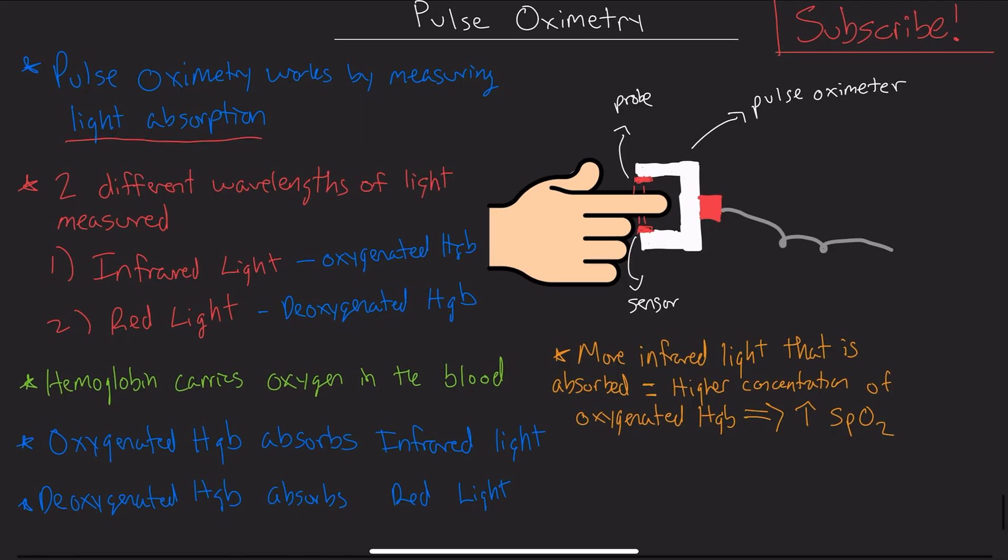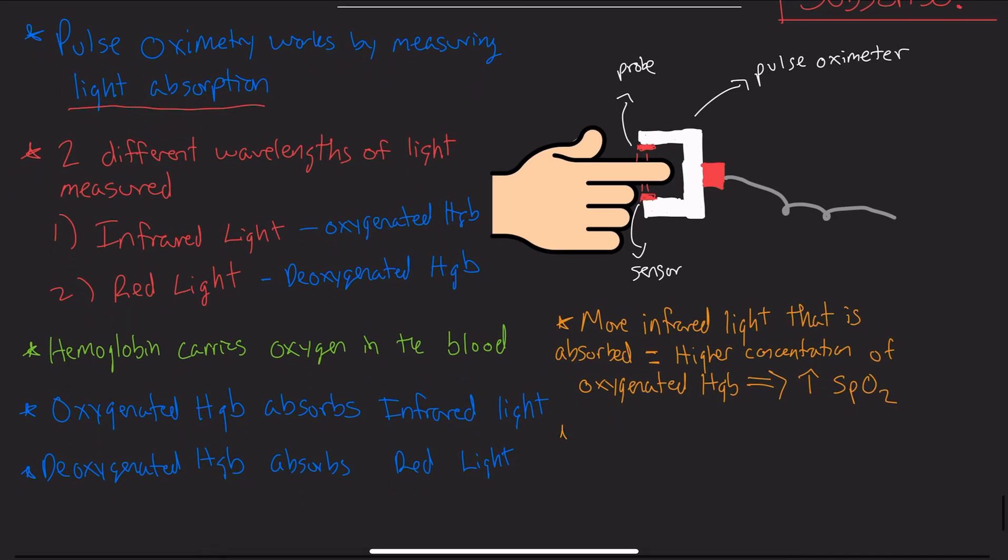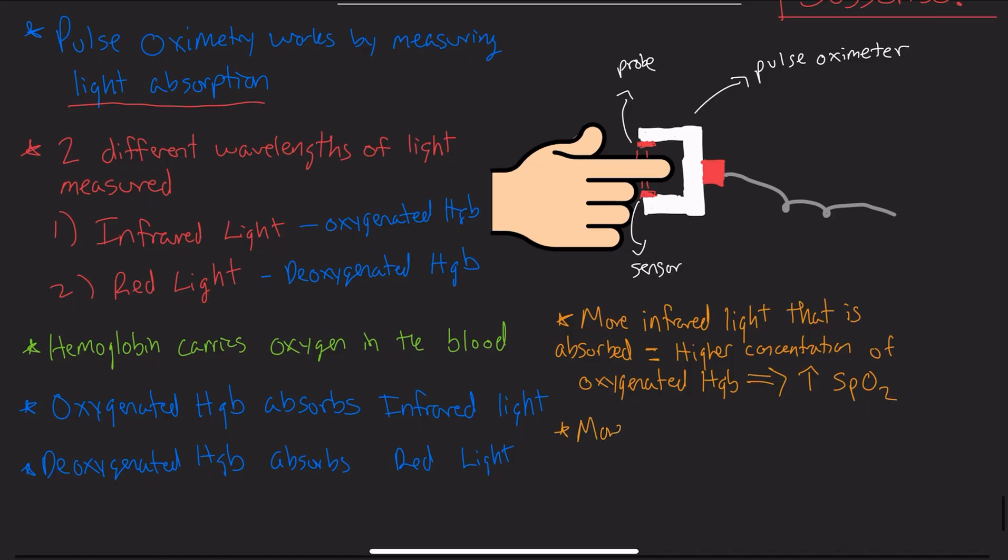We can do an example the other way. The more red light that is absorbed, this means there is a higher concentration of deoxygenated hemoglobin, and a higher concentration of deoxygenated hemoglobin correlates with a lower SpO2.